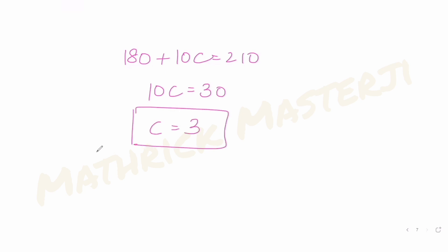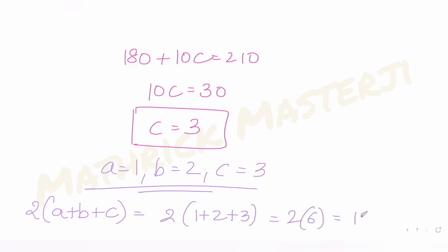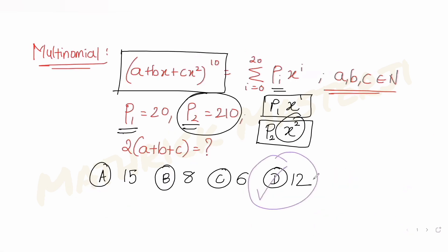So we have a = 1, b = 2, c = 3. The question asks for 2(a + b + c) = 2(1 + 2 + 3) = 2 × 6 = 12. This matches option D, so D is the correct answer.